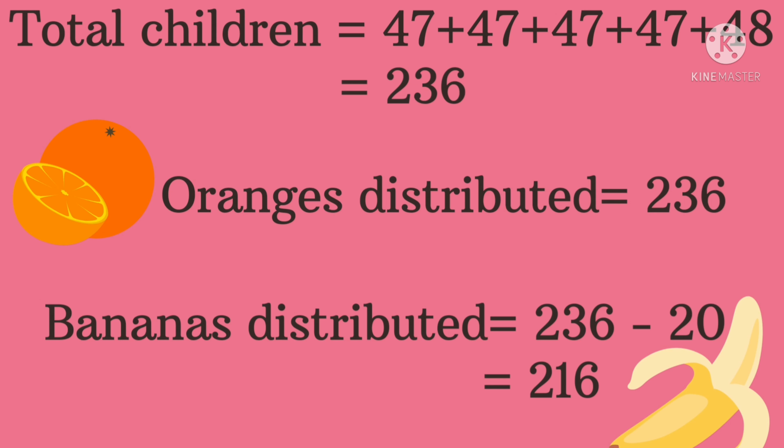Here is the solution. Total children: 236, and each child took one orange, so oranges distributed is also 236. But 20 children didn't take banana, so bananas distributed are only 216.